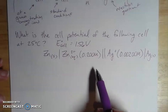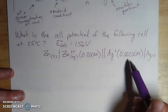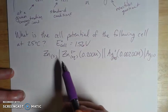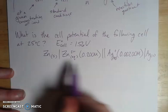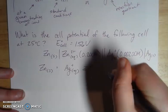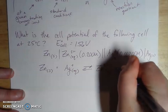So what's the cell potential of the following cell? You'll note for these types of problems that the concentration of the ions is in parentheses after the ion itself. The equilibrium is going to be our zinc metal plus our silver ions giving us our zinc ions and our silver metal.